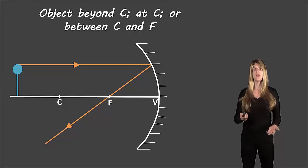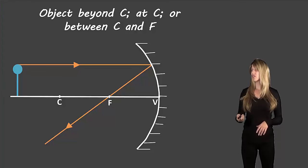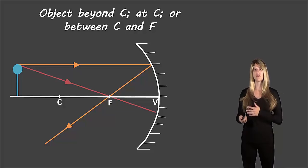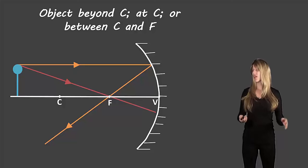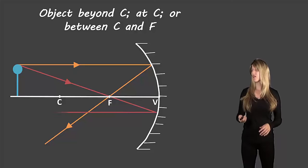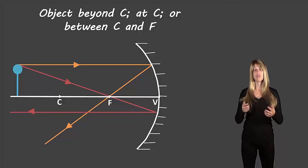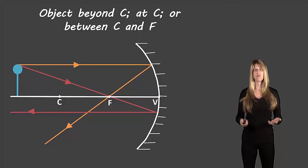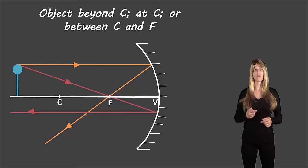Our next rule is actually just the opposite of that. If a light ray goes through the focus — the incident ray passes through the focus — it will reflect off the mirror parallel to the principal axis. Those two are inverses of each other, so it might be easy to remember one rule and then just flip it around for the other.